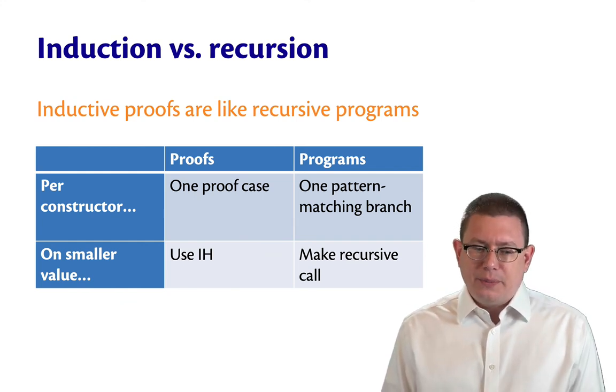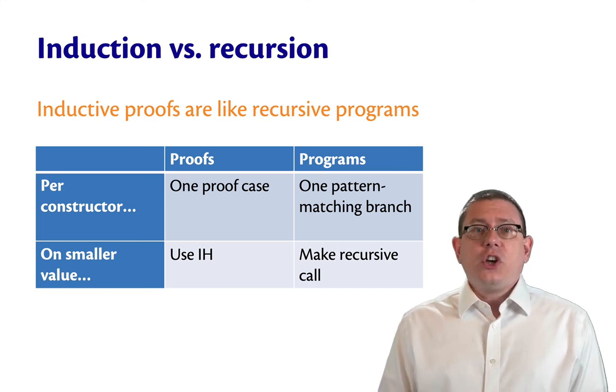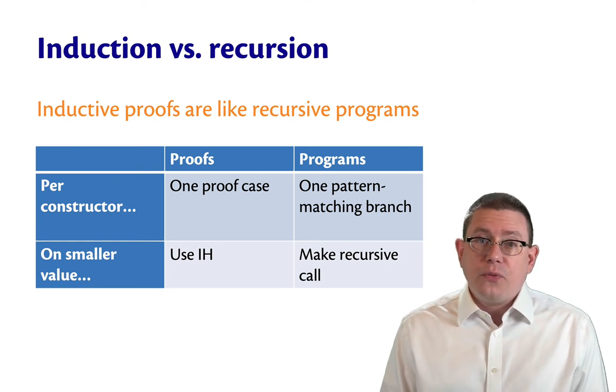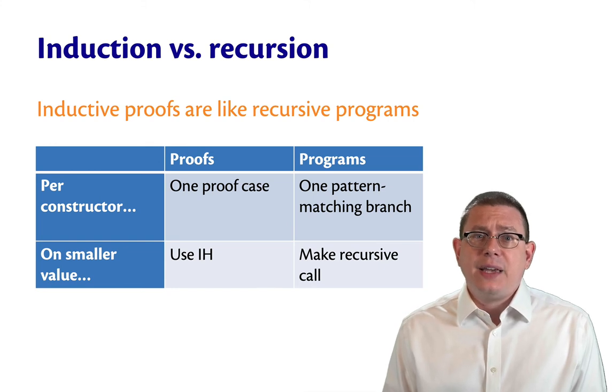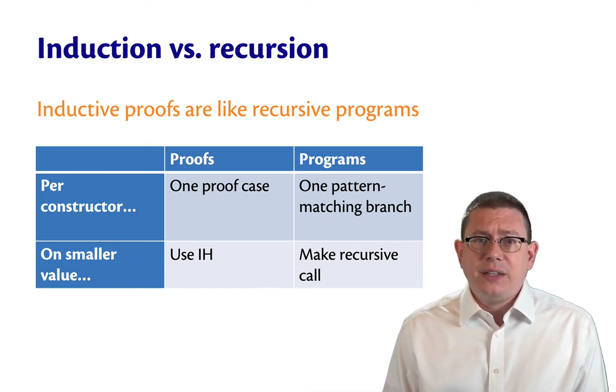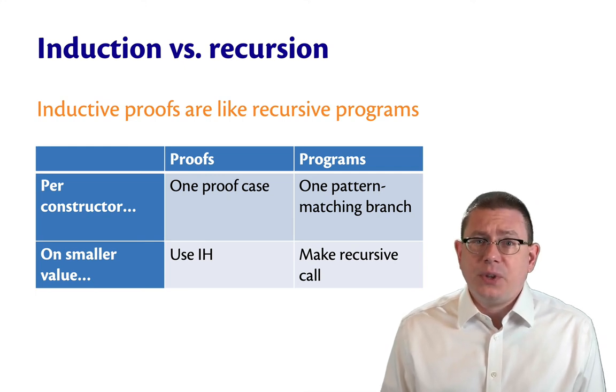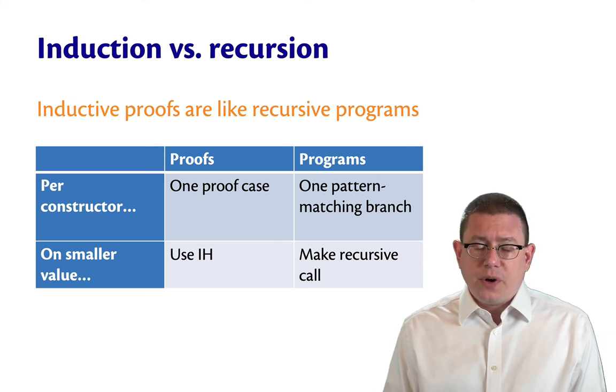Let's compare proofs and programs. And let's think about the data types we define. For each constructor of a data type that we define, in a proof, we typically have one proof case. So think about lists. We had a base case for nil and an inductive case for cons. Think about trees. We had a base case for leaf. We had an inductive case for node. So that's one proof case per constructor.